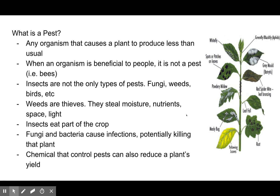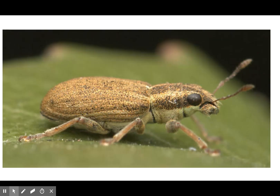Insects eat part of the crop. Fungi and bacteria cause infections and potentially kill the plant. Chemicals that control pests can also reduce the plant's yield, which is how much they produce.